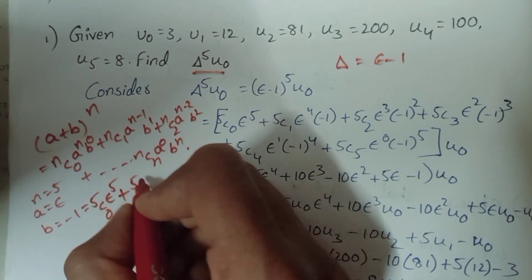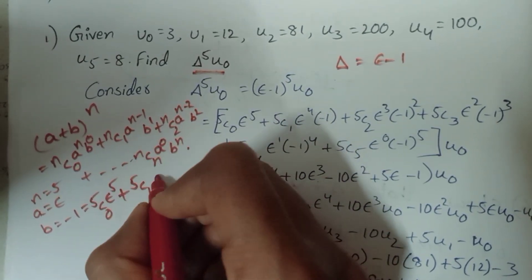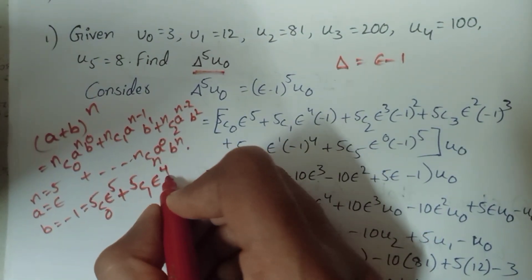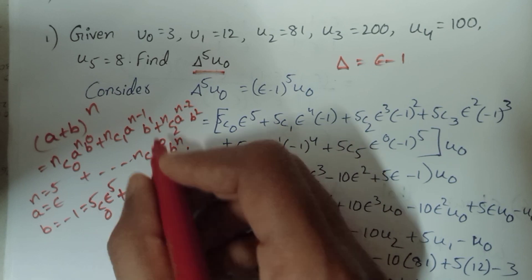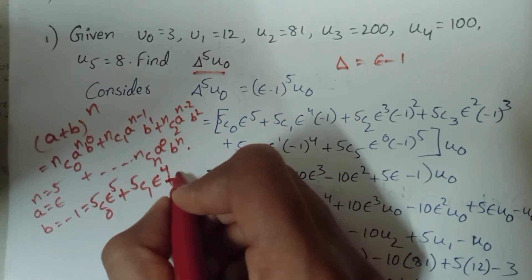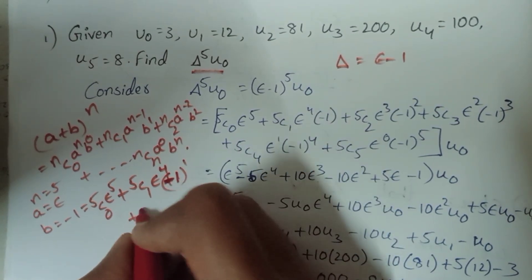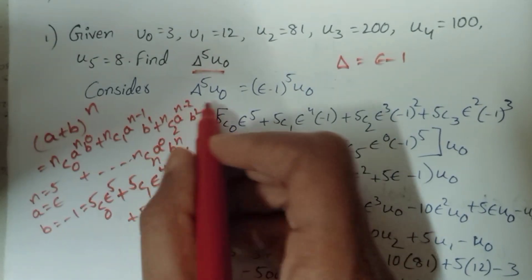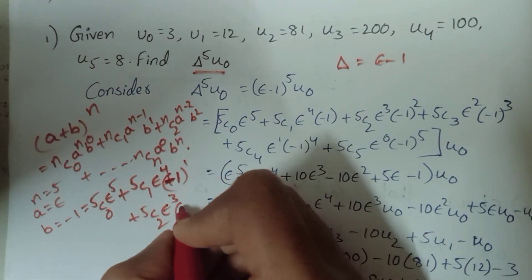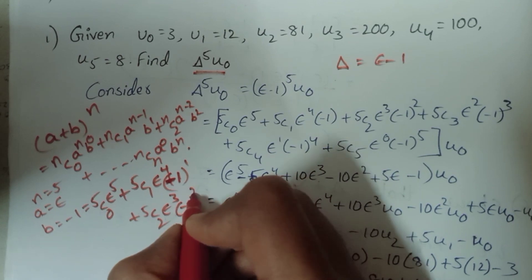Next, 5C1 times e power (n minus 1) equals e power 4, with b power 1 equal to minus 1. Then plus 5C2 times e power (n minus 2) equals e power 3, and (minus 1) power 2 equals minus 1 whole square.